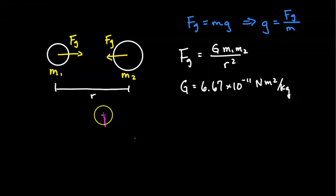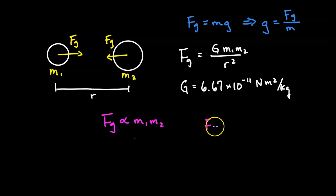The gravitational force is proportional to the product of the masses — doubling one mass doubles F_g; doubling both quadruples it. It also follows an inverse-square relationship with distance: doubling the distance reduces F_g by a factor of 4; tripling the distance reduces it by a factor of 9. Conversely, halving the distance increases F_g by a factor of 4.